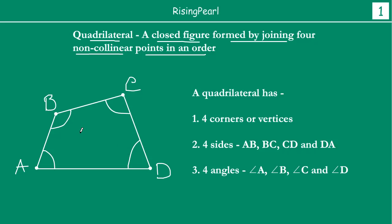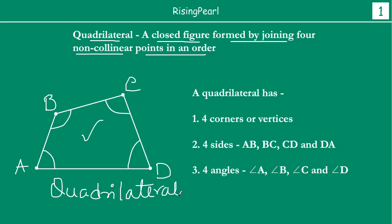So ye jo dosta hamay closed figure milti hai, this is what we call as quadrilateral ABCD and we write it like this: Quadrilateral ABCD. So those are the unique things about a quadrilateral — 4 corners, 4 sides, 4 angles.